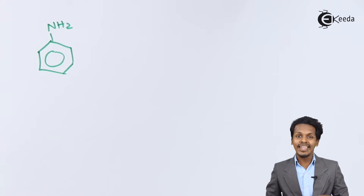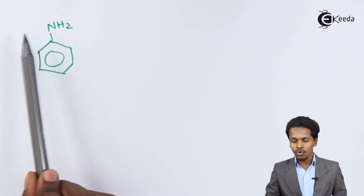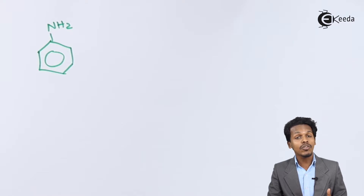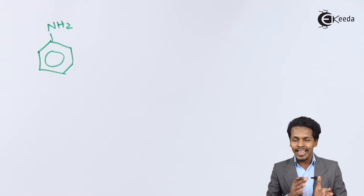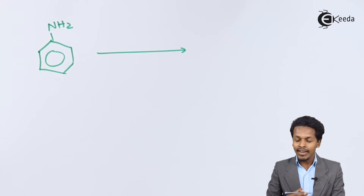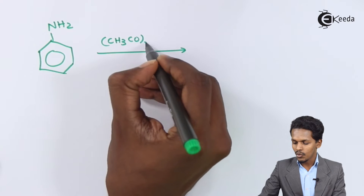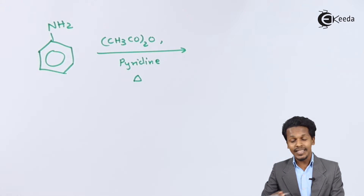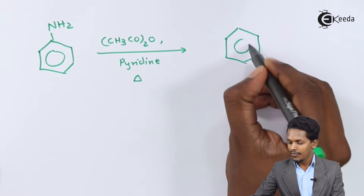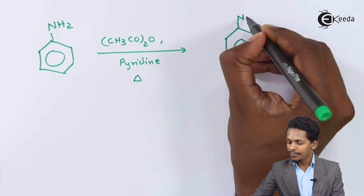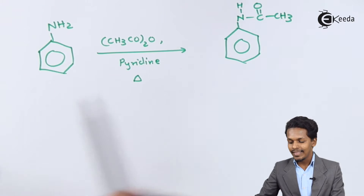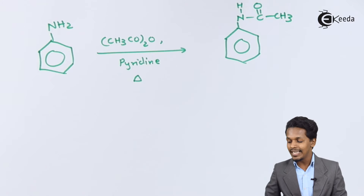Since the NH₂ group is a very strong activating group, we are going to convert it into some other group so that it no longer acts as a strong activating group — it will act as a less activating group, enabling us to prepare a mono-halogen derivative. We convert NH₂ into an acetamido group using acetic anhydride, (CH₃CO)₂O, in the presence of pyridine as a solvent.